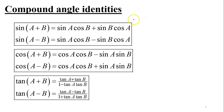In this lesson we're going to be introducing the compound angle identities in trigonometry, which involves determining the trigonometric lines of the sum and difference of two angles. The identities involve determining sine of a plus or minus b, cosine of a plus or minus b, and tan of a plus or minus b. We're going to prove these identities in another lesson; however, in this lesson we're going to be introducing them.